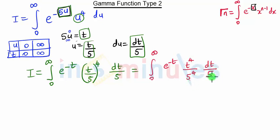We can combine these two 5s and take them out of the integration to get 1 upon 5 raised to 5, times integration 0 to infinity e raised to minus t times t raised to 4 dt.